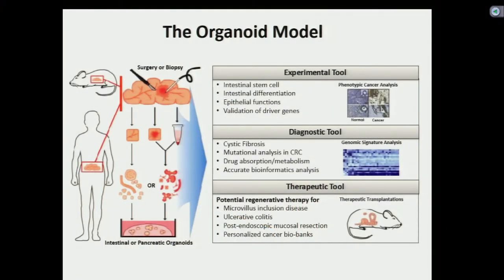Shown here is the tumor microenvironment, and because cell culture dishes right now only supply a two-dimensional model, we're unable to capture all these different components of the microenvironment, which is crucial to understanding how a tumor will grow in a real human body. The most promising approach to combat these problems seems to be the organoid model, in which minced tissue is implanted into a collagen-based layer and suspended in a three-dimensional matrix. This allows a wide variety of applications, from an experimental tool for understanding stem cell differentiation, to diagnostic tools for cystic fibrosis or therapeutic tools for understanding colorectal cancer.